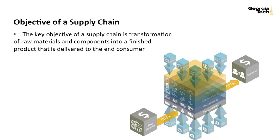Finished products are items that are consumed by an end customer, otherwise known as a consumer. We will see that there may be many customers throughout a supply chain. However, the end customer that consumes the finished product is known as the end consumer. Examples of finished products may include gasoline, furniture, and smartphones.